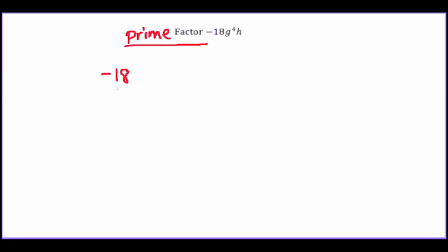Just like we learned previously, anytime you have a negative value you know right away that one of your factors is negative 1, and negative 1 times 18 is negative 18. I'm going to circle the negative 1 in orange to show that it is a prime number.